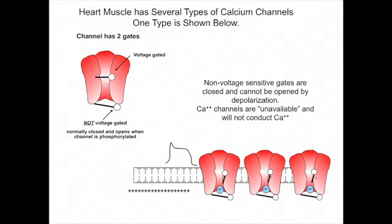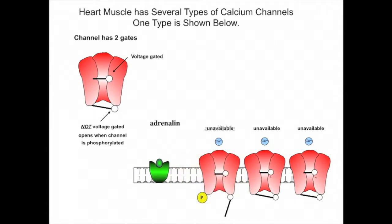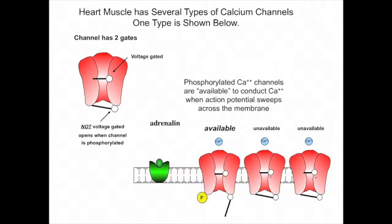These channels are phosphorylated by the action of metabotropic adrenergic receptors — receptors that bind adrenaline and activate a G-protein that ultimately causes the phosphorylation of the channel. When the channel is phosphorylated, the non-voltage-sensitive gate is opened, and the channel becomes available to conduct calcium when the membrane depolarizes.